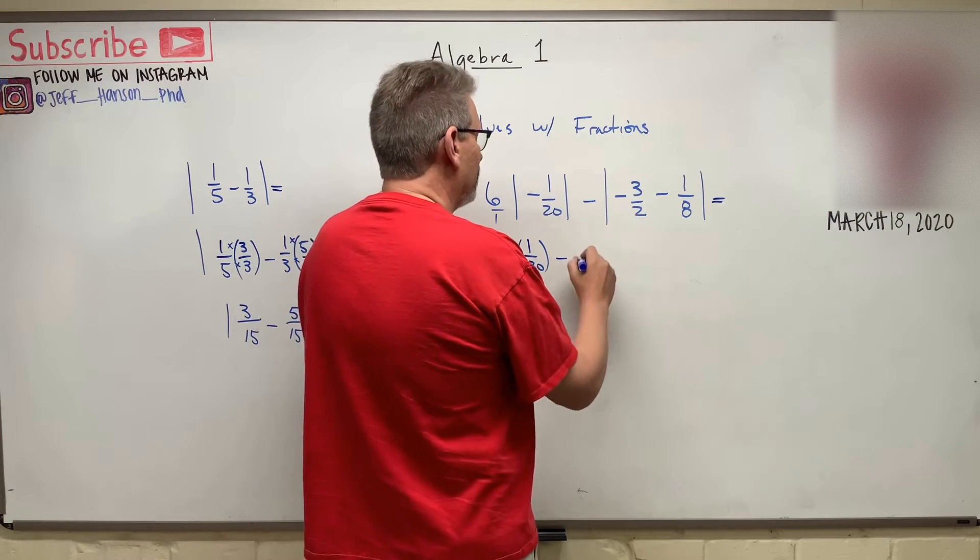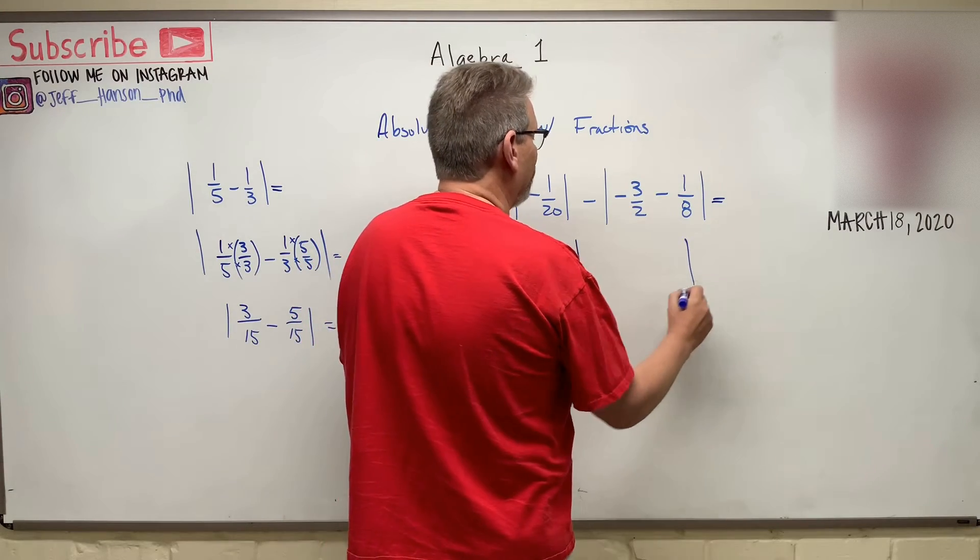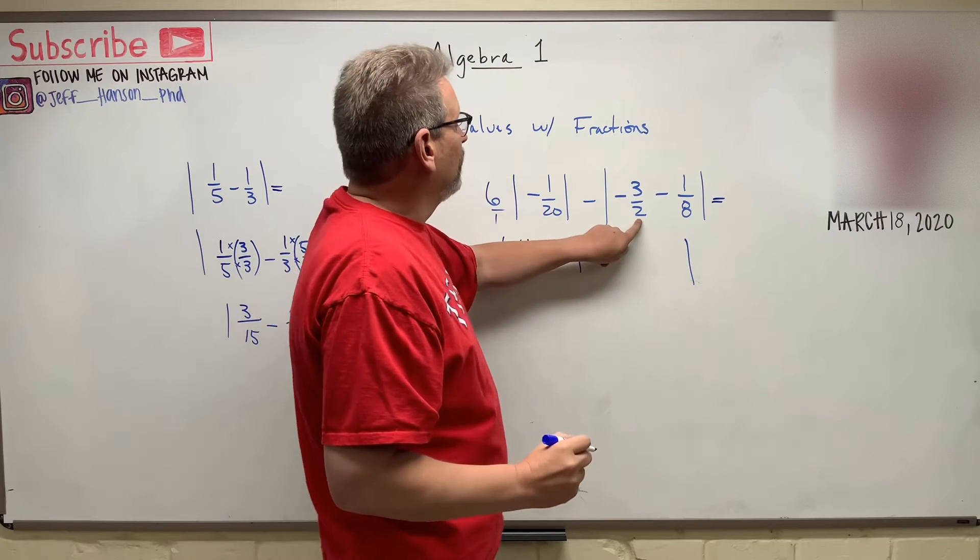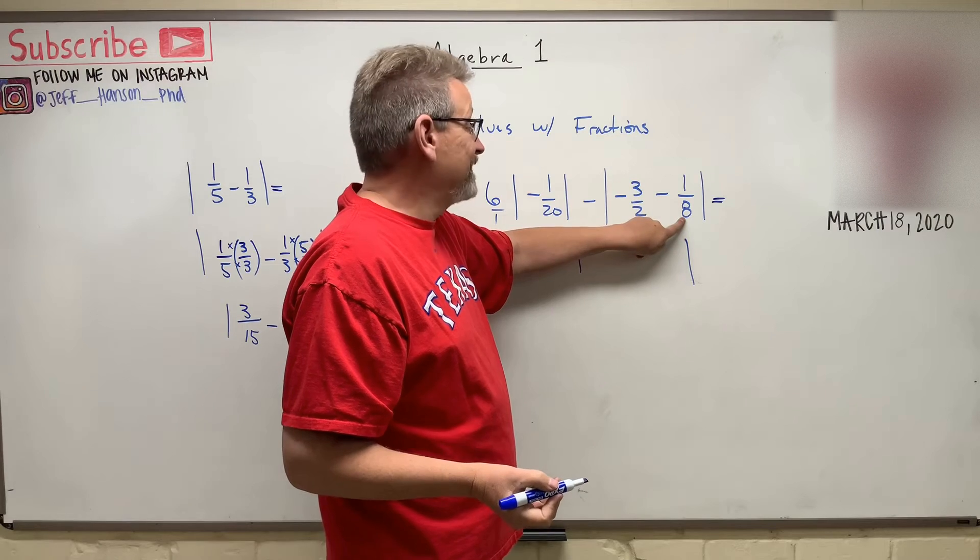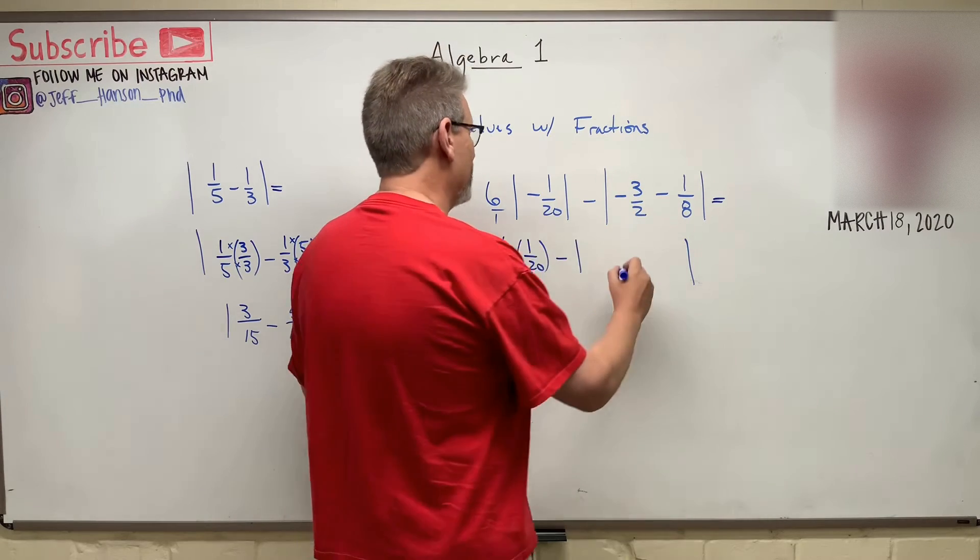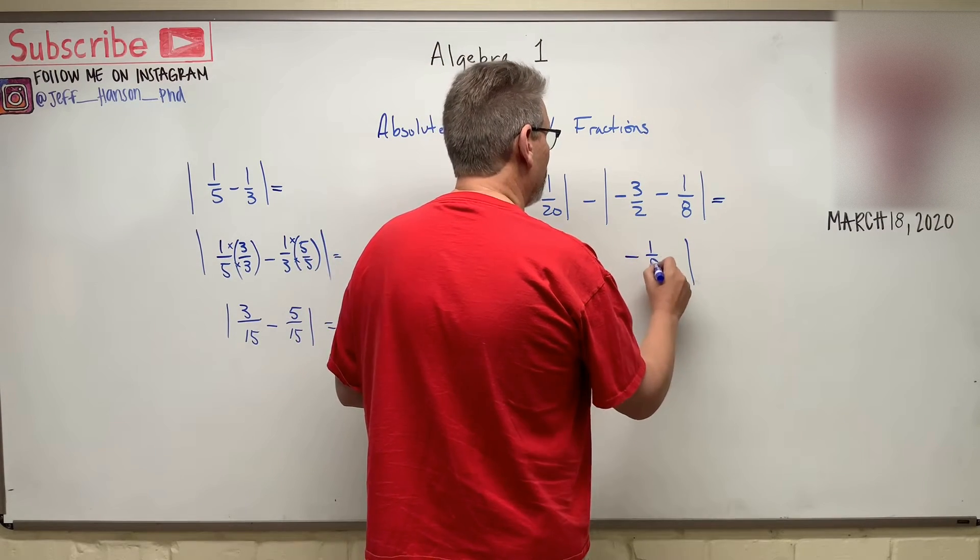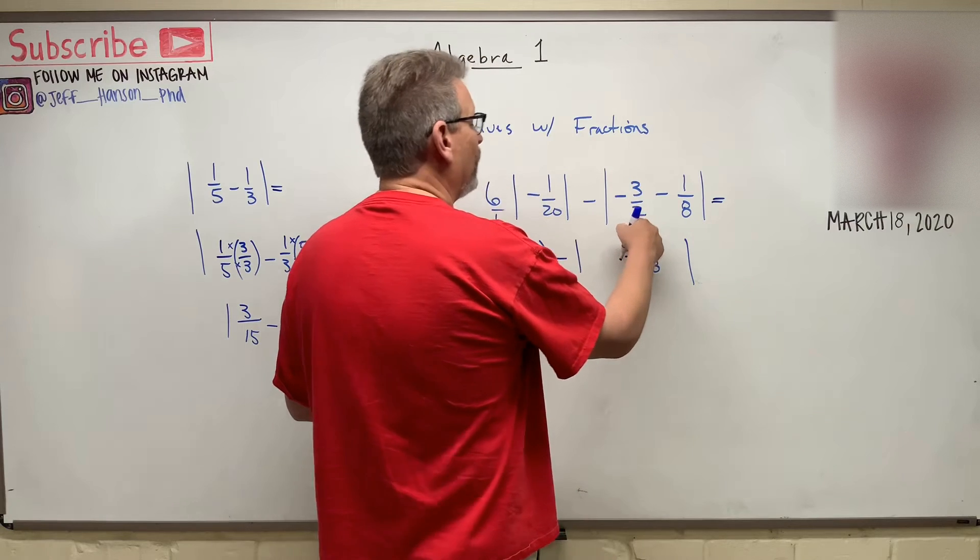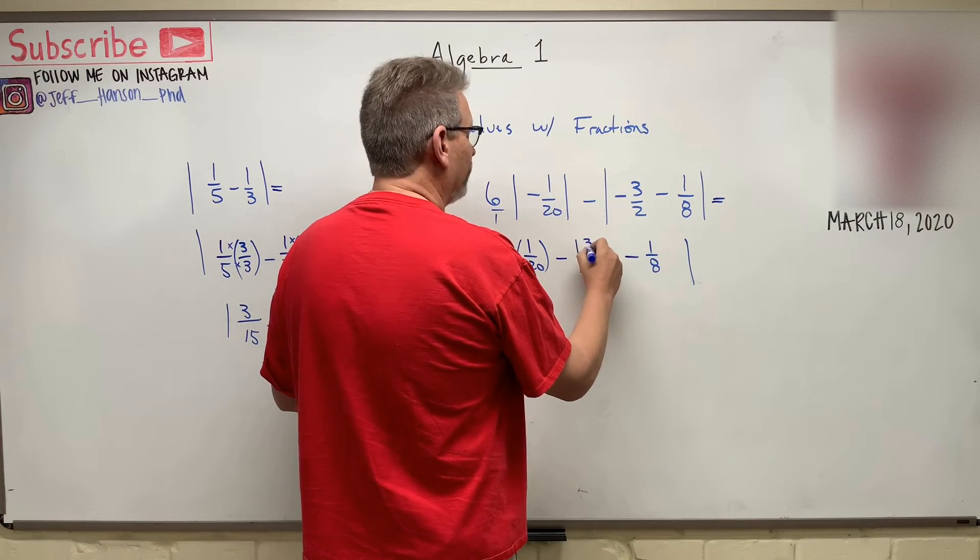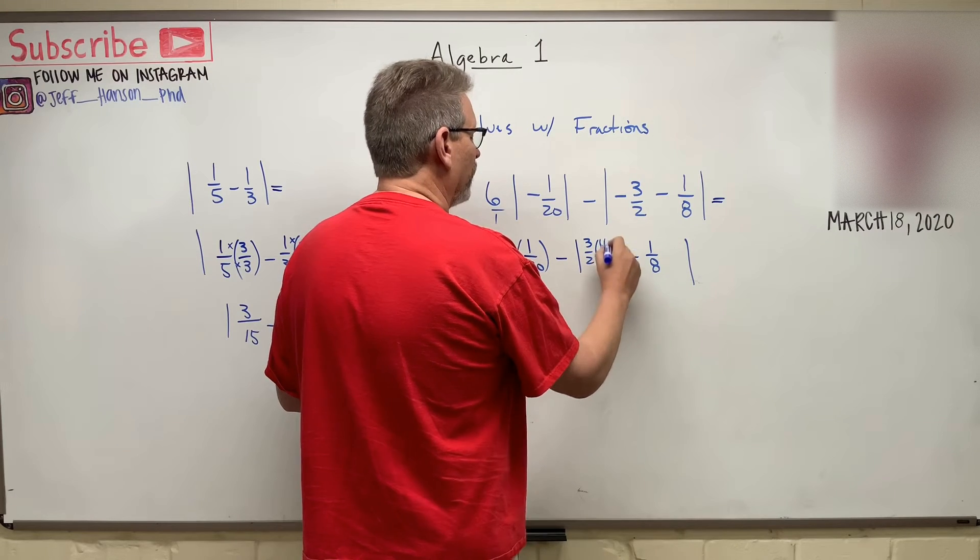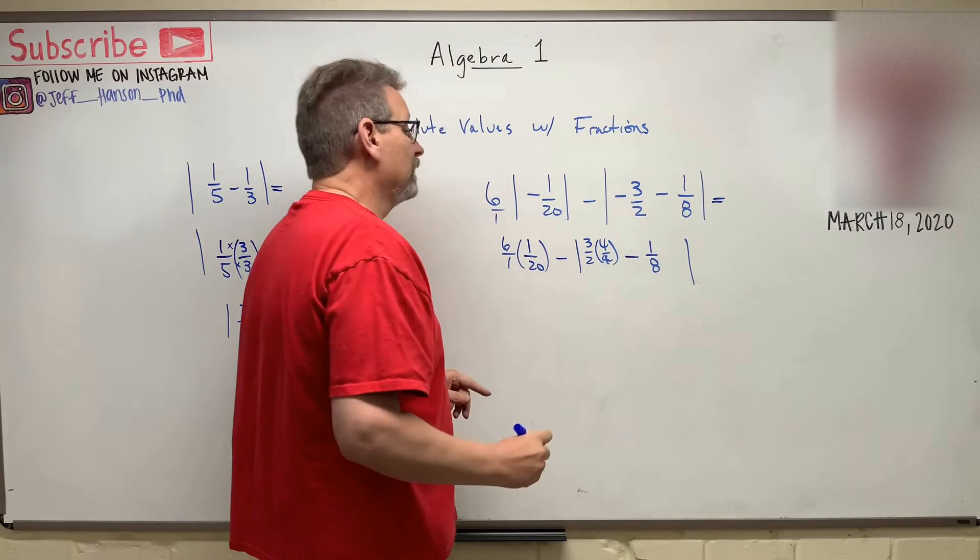Minus, I'm going to treat that like parentheses. The least common multiple for 2 and 8 is actually 8. So minus 1 eighth, and what am I going to do with that guy? How do I get him into an 8 on the bottom? I have to multiply by 4. So 3 over 2 times 4 over 4. That's a 4.